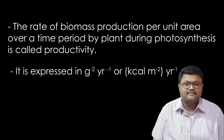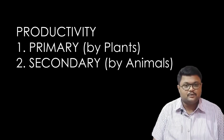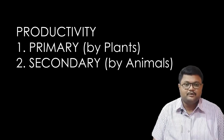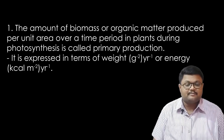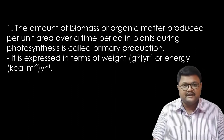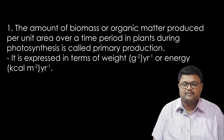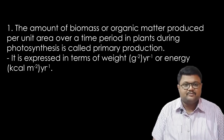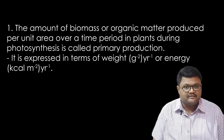Now let us enter the types of productivity. Productivity has two types: primary productivity and secondary productivity. The definition of primary productivity concerns the producers, that is plants, and secondary productivity concerns the consumers or animals. Primary productivity is the amount of biomass or organic matter produced under a specific area and specific time during photosynthesis by plants. It is also measured in g m⁻² yr⁻¹ or kilocalorie per square meter per year.